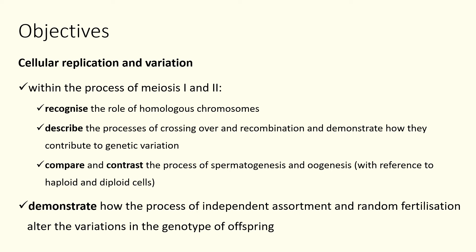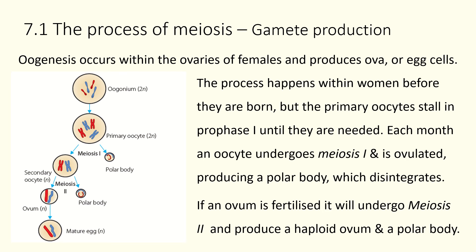Before we do that, the end product of meiosis is gamete production — we've got these sex cells that we can use for sexual reproduction. If you possess ovaries, you undergo oogenesis, which produces ova. This process happens via meiosis, and for people with ovaries, it actually begins before they're even born, while still in utero.